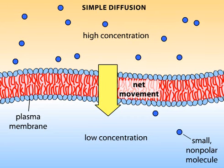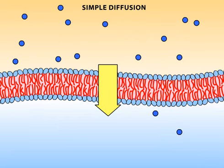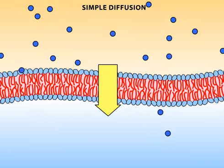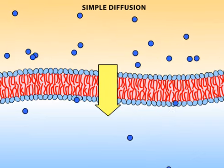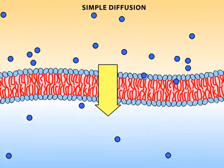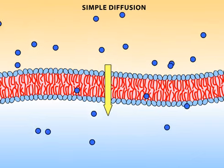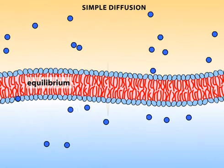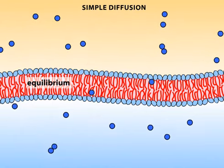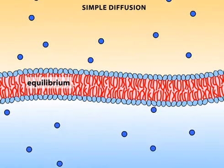In general, only small non-polar molecules can pass unaided through a phospholipid bilayer. Molecules move randomly and tend to diffuse across the membrane from regions of high concentration to regions of low concentration. At equilibrium, equal numbers cross the membrane in both directions.